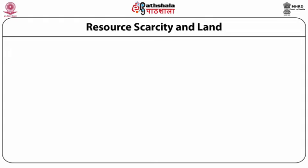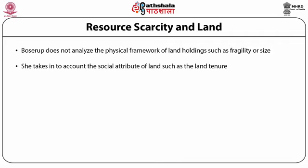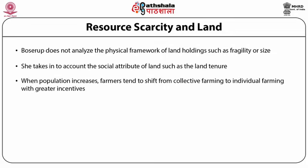Both Malthus and Boserup's models suffer from weaknesses. For instance, Boserup does not analyze the physical framework of land holdings such as fragility or size. However, she takes into account the social attribute of land such as land tenure. According to her, when population increases, farmers tend to shift from collective farming to individual farming. Individual farming gives more incentive to the farmer to invest in land and increase returns, thereby increasing soil productivity. This seems logical, yet some questions remain unanswered.